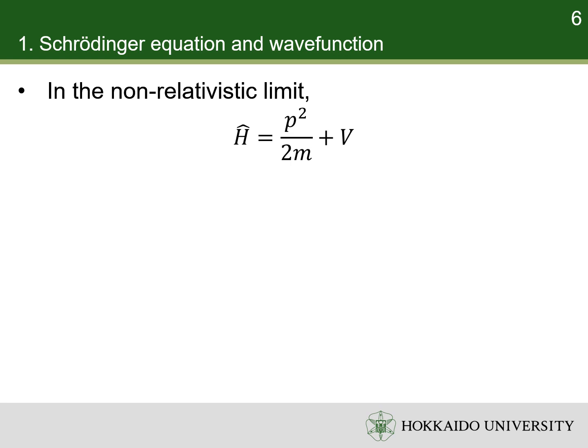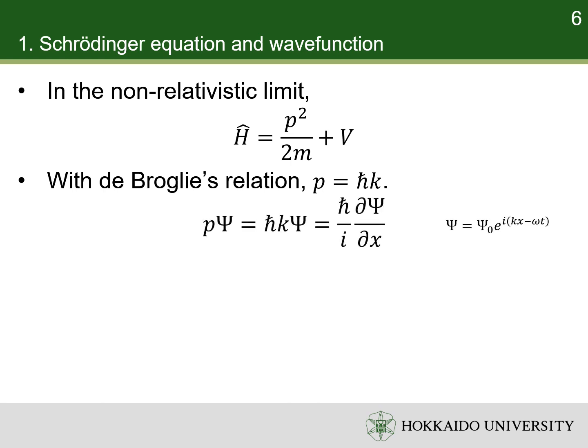In the non-relativistic limit, the kinetic energy is equal to the square of momentum divided by twice of mass. Meanwhile, Schrödinger equation must be consistent with the de Broglie hypothesis. Thus, the momentum of a matter wave is related to its wave vector through reduced Planck constant. According to the function of plane wave, multiplying the momentum to a wave function is equivalent to partially differentiated with respect to position. This is called the momentum operator. Then, the operator for Hamiltonian can be calculated.